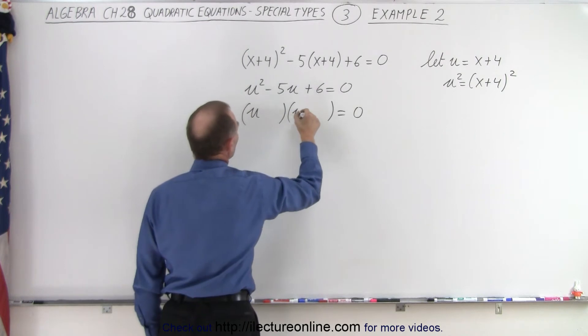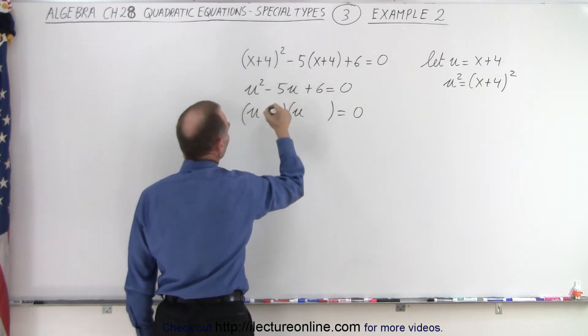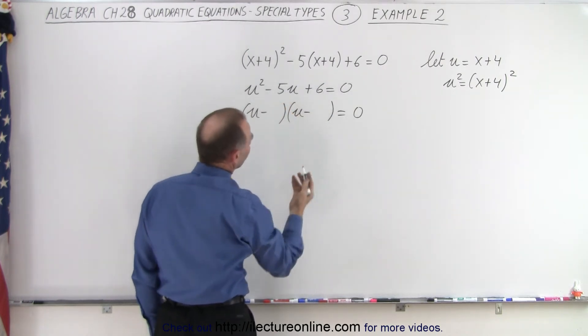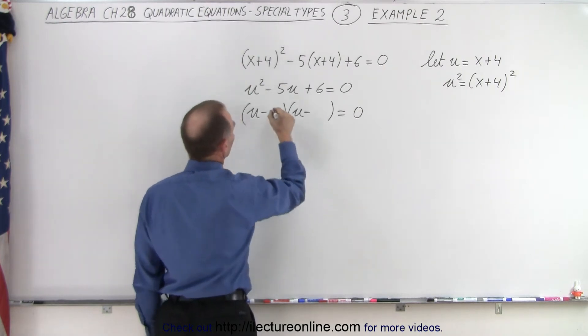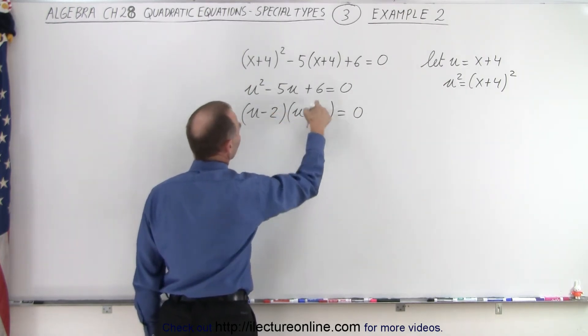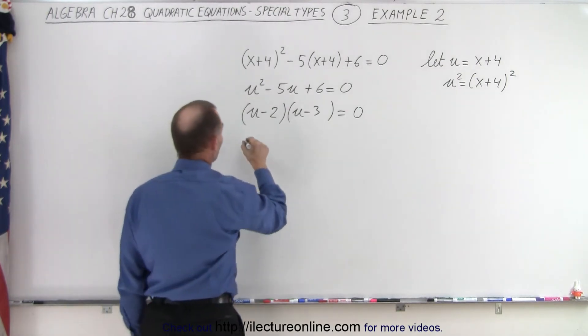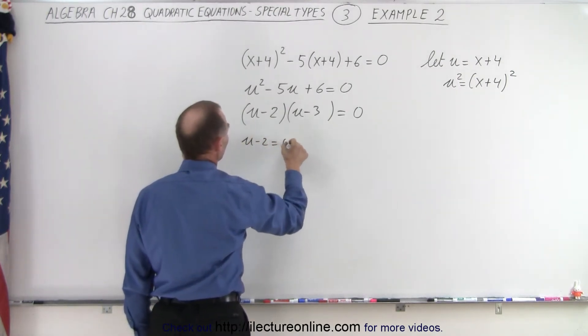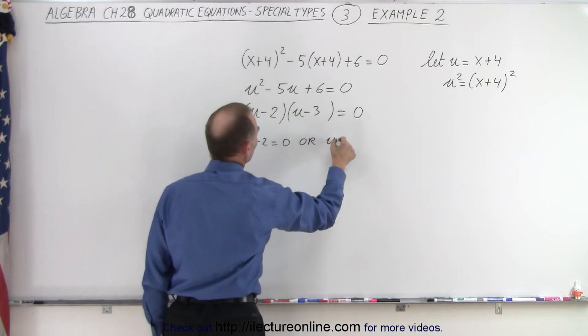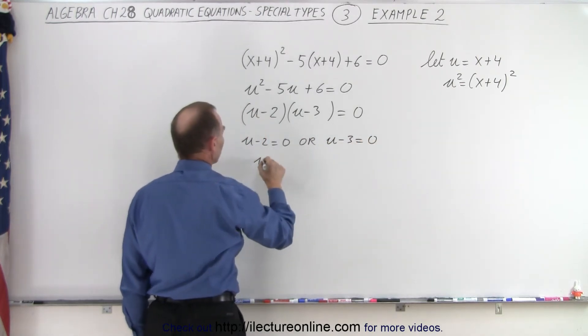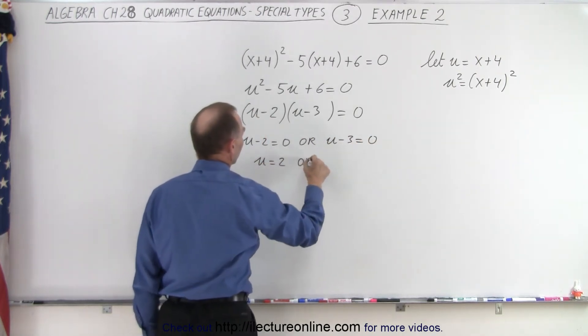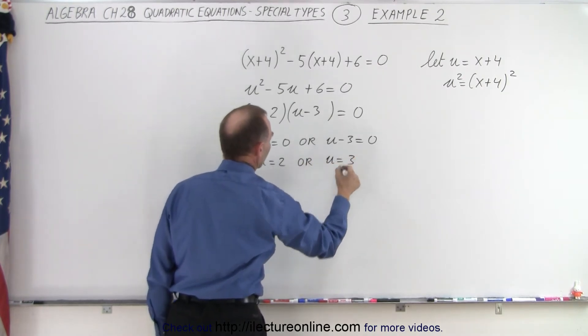Equals 0. So we end up with u and u. We have a plus here and a negative there, so they're both minus. And let's see, 2 and 3, because when I multiply I get 6, when I add I get negative 5. So that means that u minus 2 equals 0 or u minus 3 equals 0. Therefore, u is equal to 2 or u is equal to 3.